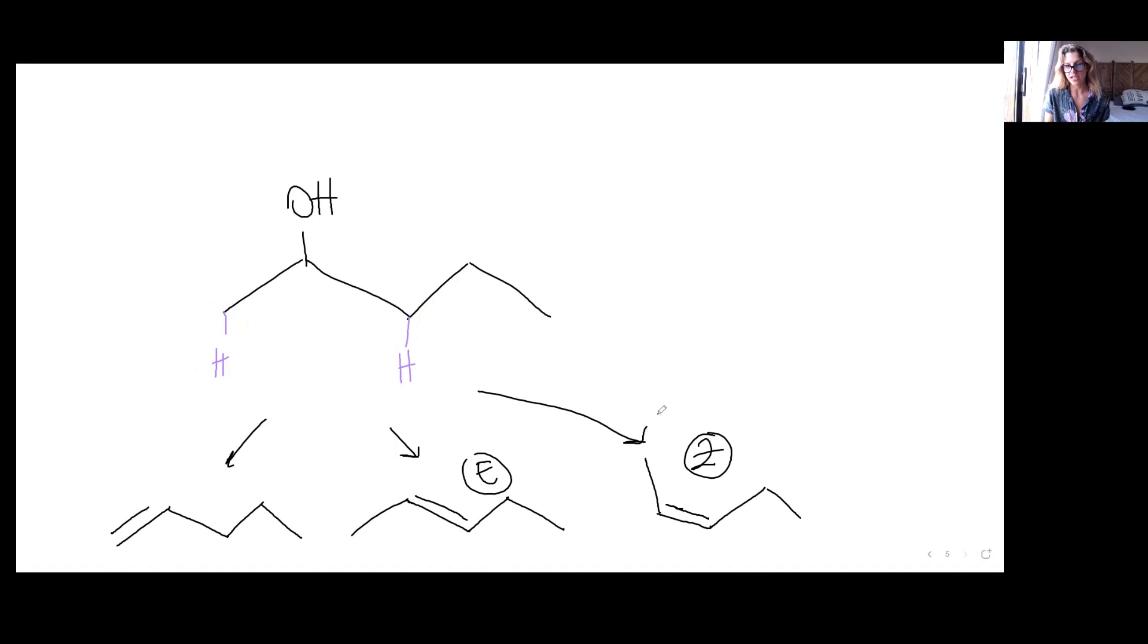Due to the restricted rotation around the double bond. If it's a primary—if the double bond is on the first carbon—this won't happen because we know that if there are two hydrogens here, their position doesn't matter; it's not relevant, so cannot have geometrical isomers.